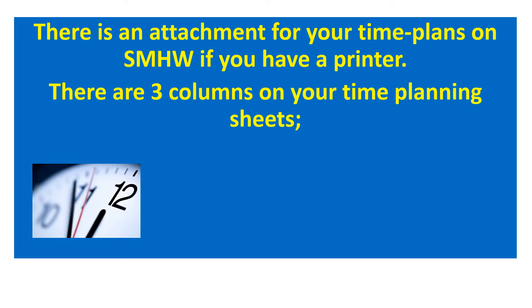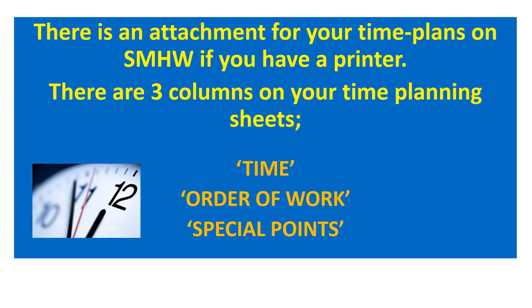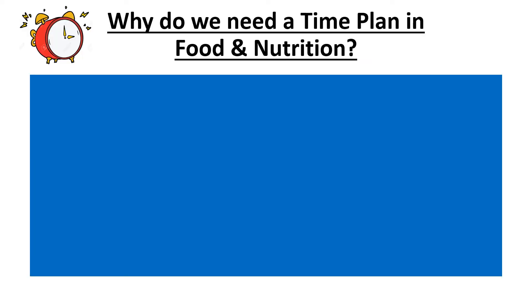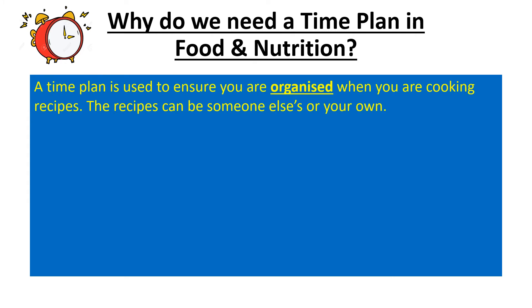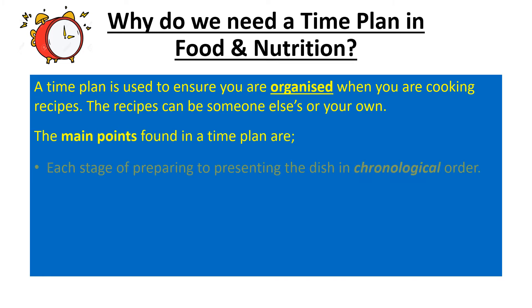There is an attachment for your time plans on Show My Homework. If you have a printer, print them off; otherwise I'd advise drawing three columns on your time planning sheets. There are three columns: time, order of work, and special points. A time plan is used to ensure that you are organized so that these recipes can be cooked by yourself again and again without going wrong, and also by someone else.